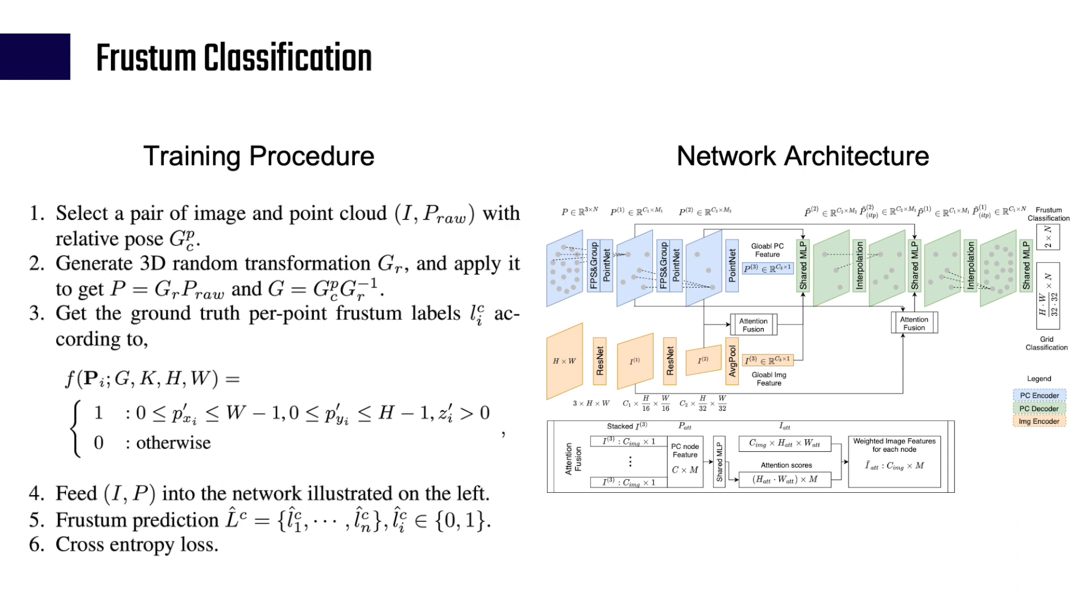Here is the training procedure. We require the ground truth relative pose between the point cloud and camera so that we can generate the per-point labels automatically without any annotation.